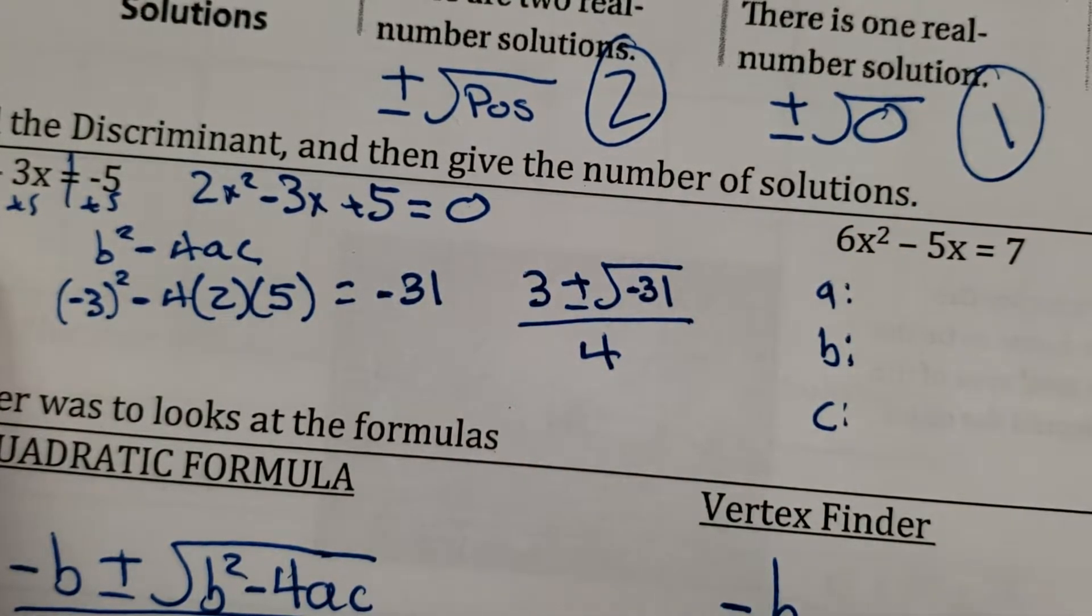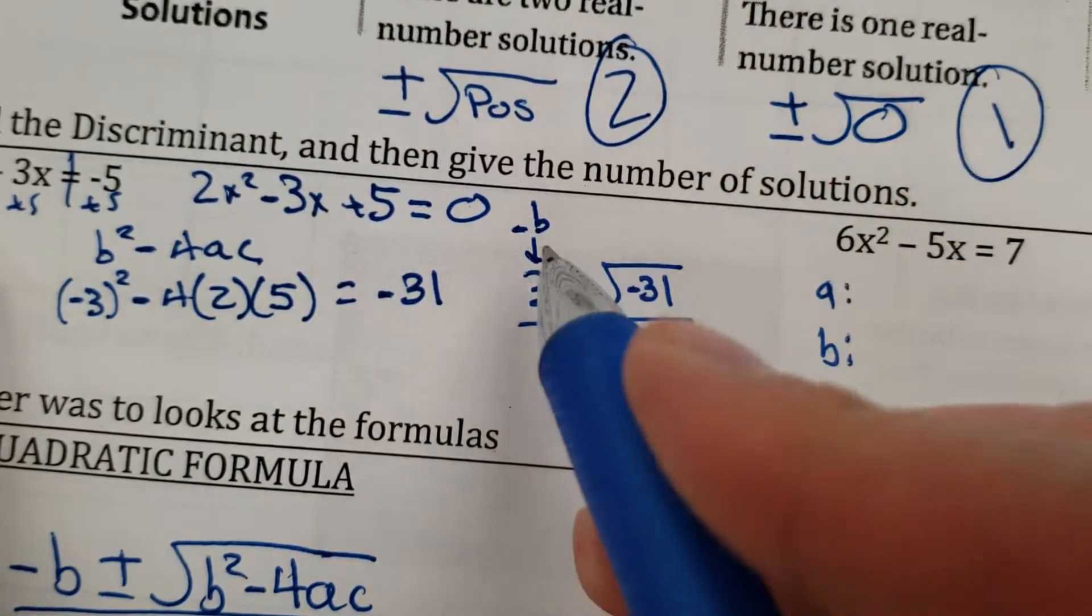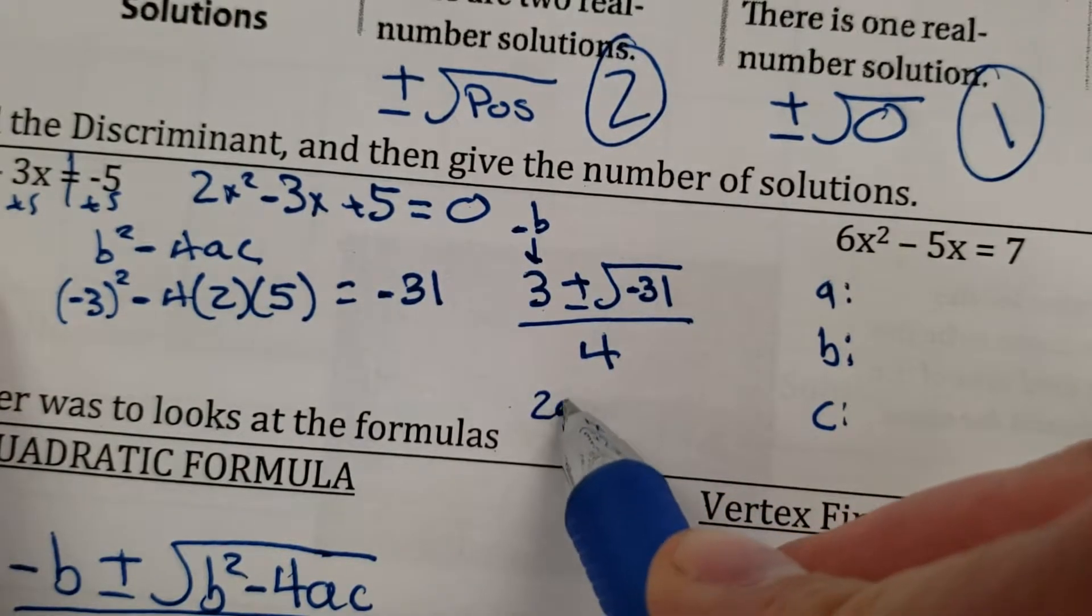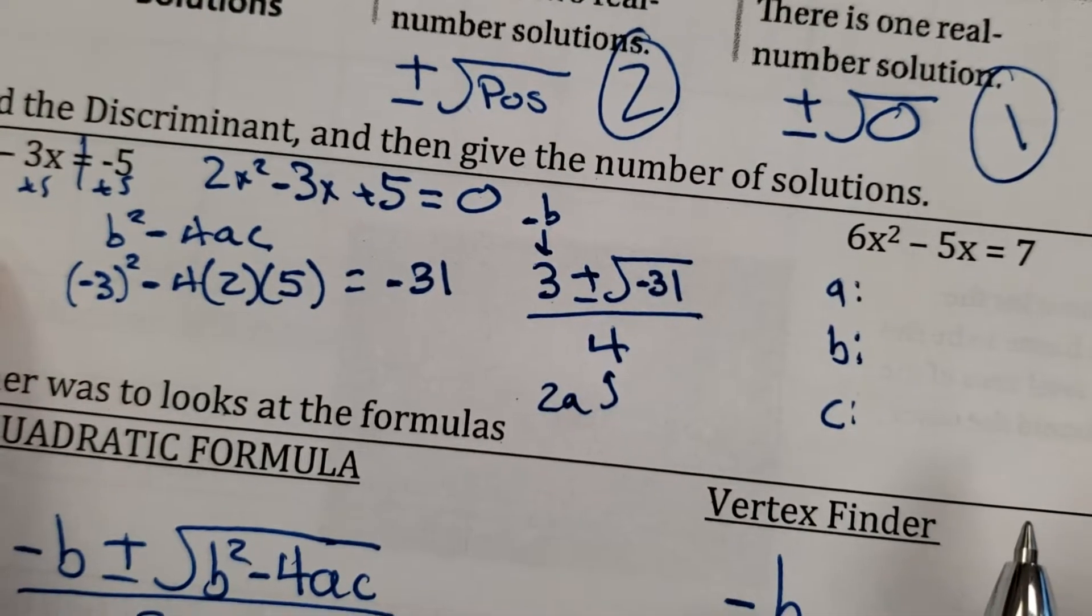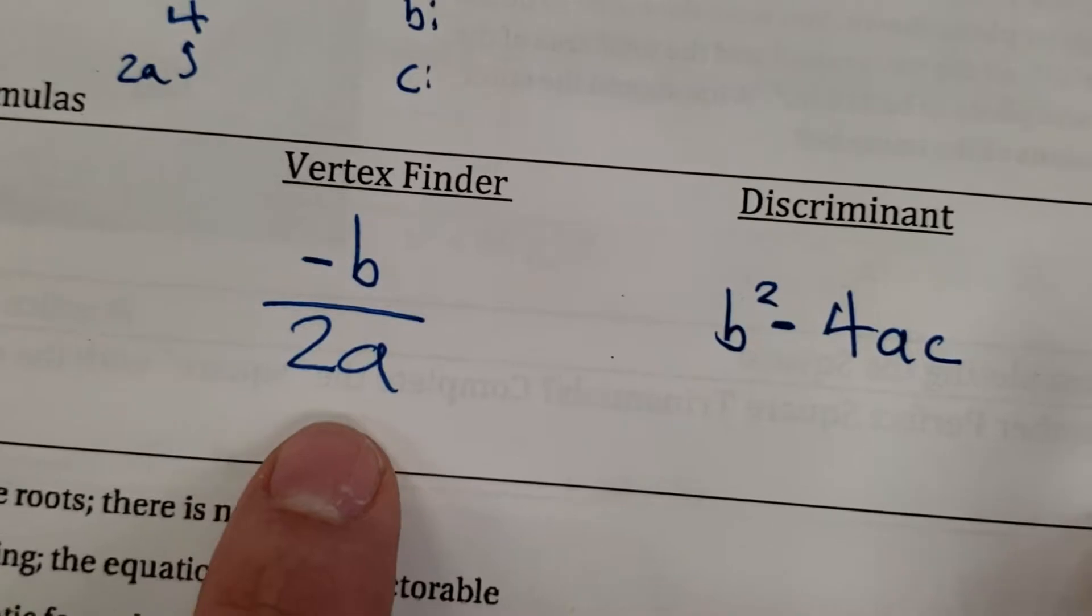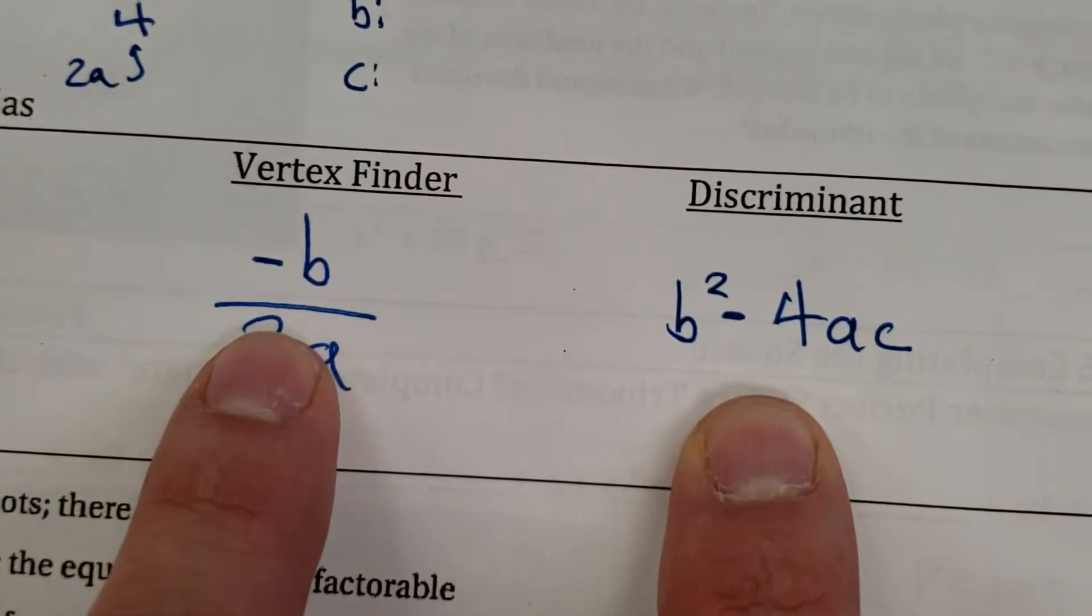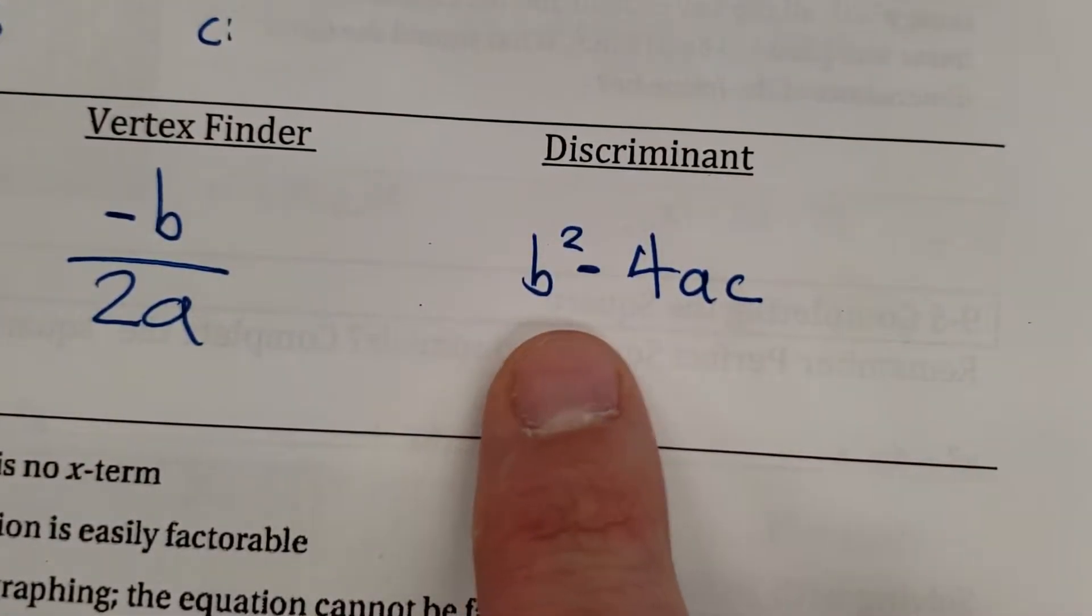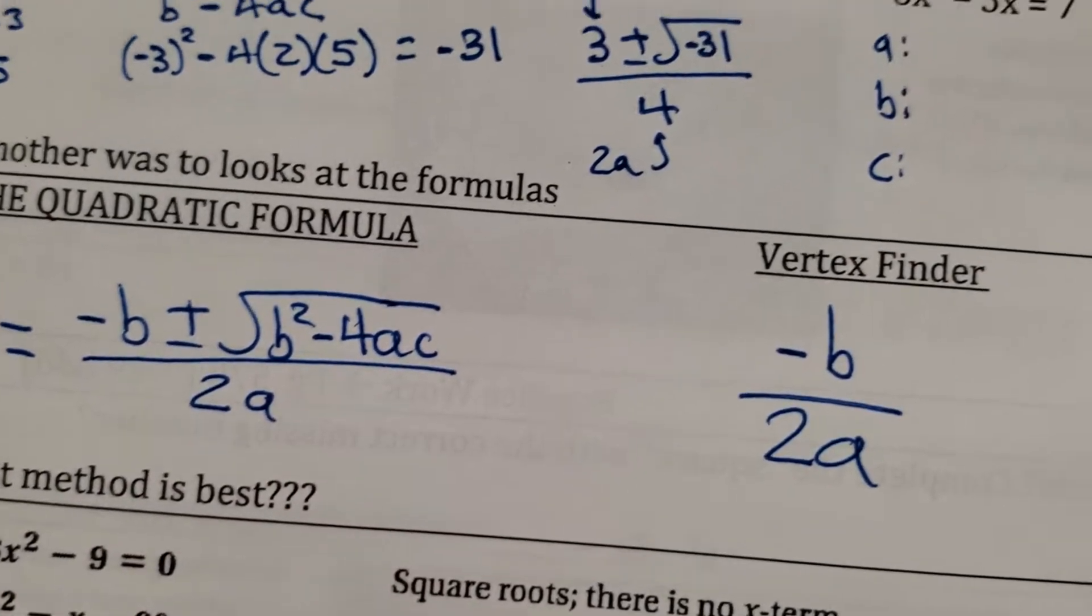Okay, so a negative negative 3 would be a positive 3 plus and minus the square root of negative 31 all over 2 times a, so a 4. So I kind of skip all those steps. So again, this is the negative b. Okay, but again, if it's a negative negative, it's positive. And then 2 times a, I just write it as a 4. So I kind of skip that, okay? Side note, I noticed this. Here's the quadratic formula. Here's the vertex finder. Here's the discriminant. Interesting.